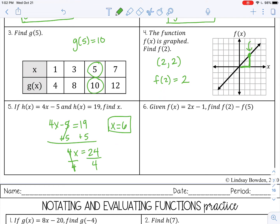Number 6. Given f of x equals 2x minus 1, find f of 2 minus f of 5. Here we're finding two values of the function. We're evaluating it at two places. So let's find f of 2 first.